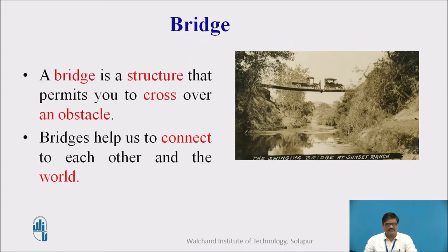Let us understand what is a bridge. A bridge is a structure which permits you to cross over an obstacle. A bridge helps us to connect to each other and subsequently to the world. As seen in the photograph, a structural media helps us to cross an obstacle, and that particular structural media we call it as a bridge.